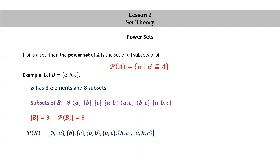The cardinality of B is three and the cardinality of the power set of B is eight. The power set of B is the set consisting of the empty set, set a, set b, set c, set ab, set ac, set bc, and set abc.